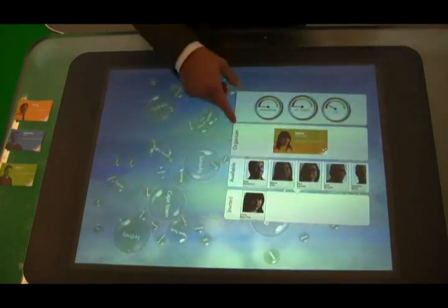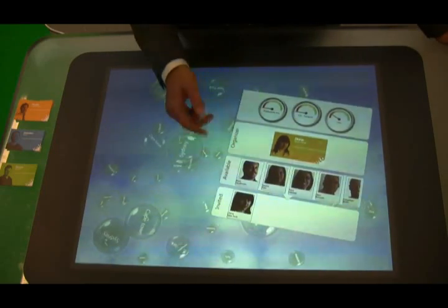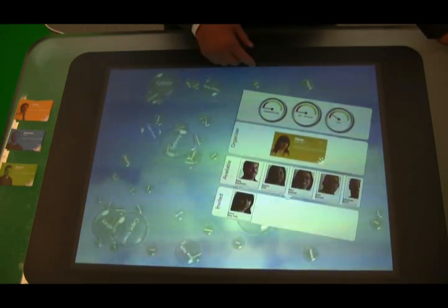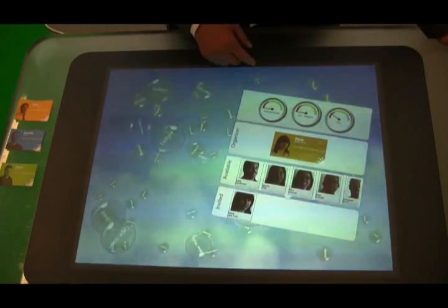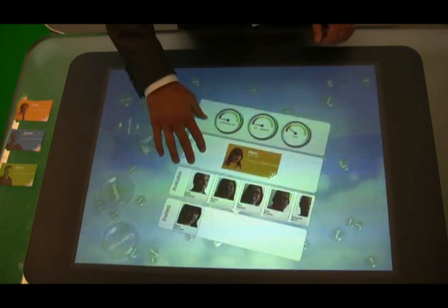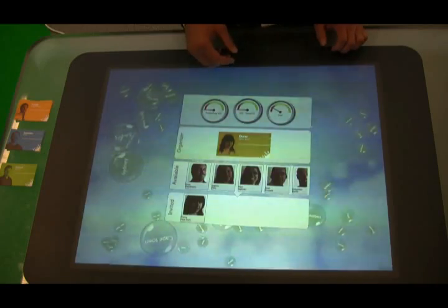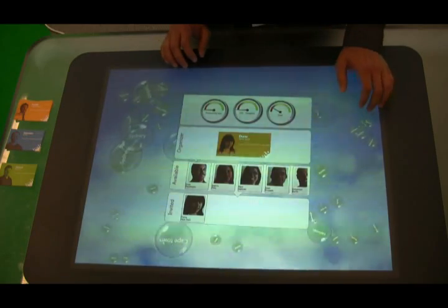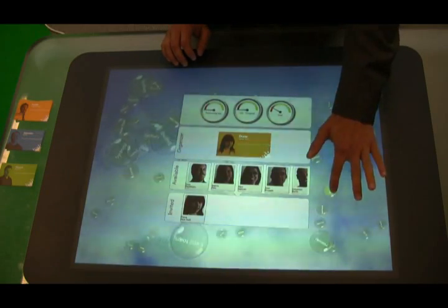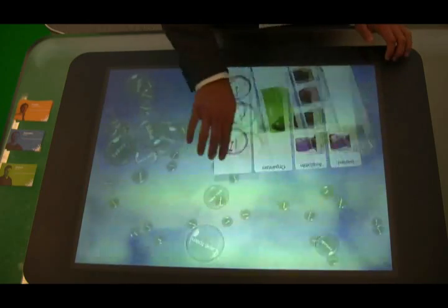So, using all of these touch features, we can easily interact with all the data on the surface and all the visualized meetings. It is an intuitive way of interacting with the data and the information that we can see here. I can instantly open up a new meeting by just clicking that bubble.